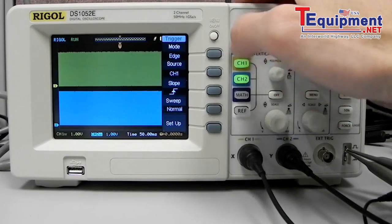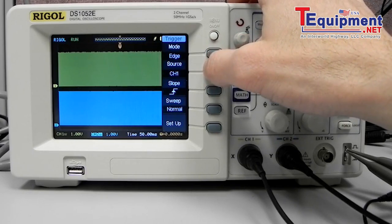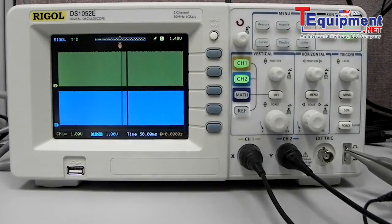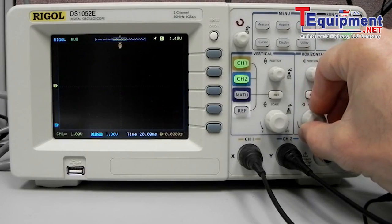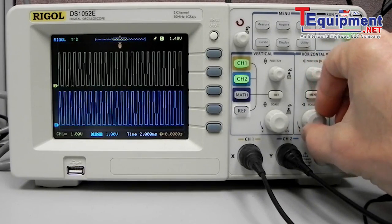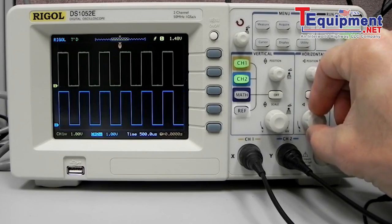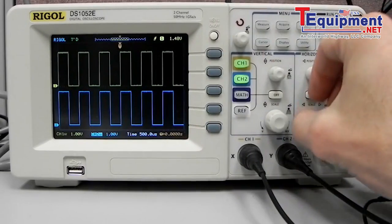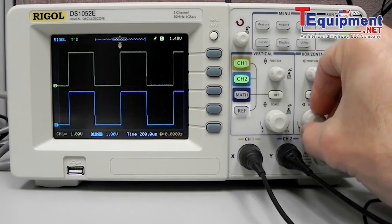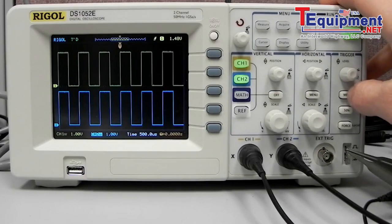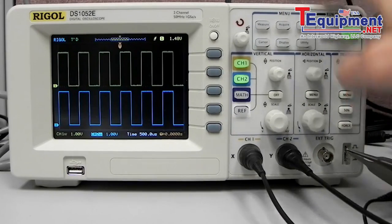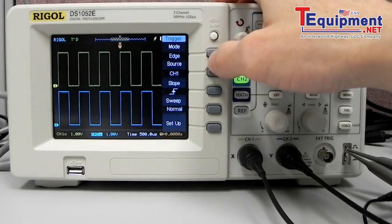In the triggering mode that we're in right now we're going to go out of auto and go to normal but we're in edge triggering mode and we're triggering on channel one. When you're in edge triggering mode the time scale is linked to both of the channels. As we start to change that time scale you'll see that both waveforms are changing appropriately and they're both logged to that same time frame horizontal time scale.